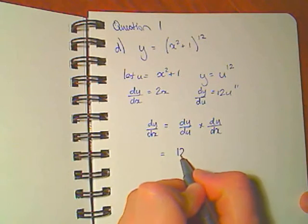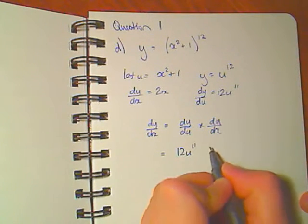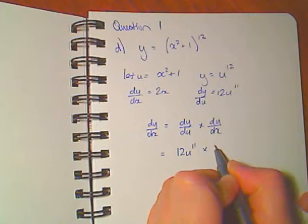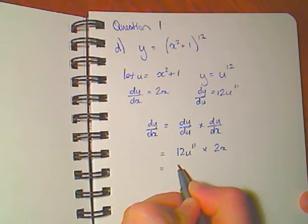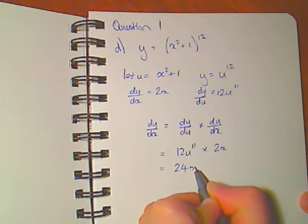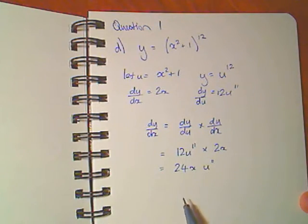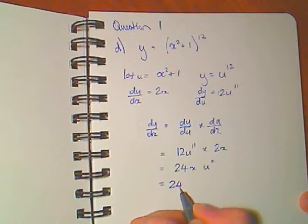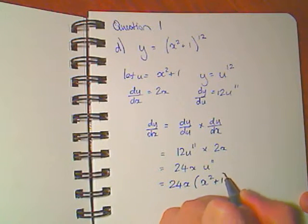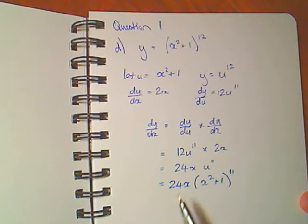dy/du is 12u to the 11th. du/dx is 2x. Alright this is 24xu to the 11th. Now u is x squared plus 1. 24x times x squared plus 1 to the power of 11. And that is my derivative.